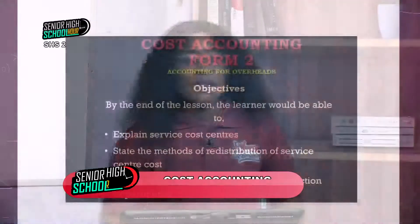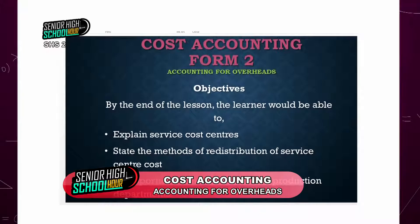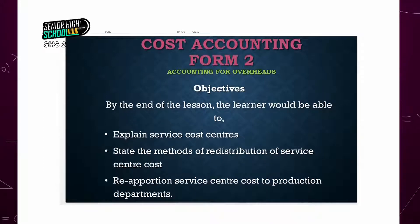Last week, we took a look at how costs are being allocated to the various cost centers — as in a department in an organization. Today, we are going to look at how we are pushing or re-apportioning the service cost centers overheads to the various departments in an organization. By the end of the lesson, we are all going to learn how cost centers work, explain cost centers, the methods of redistribution of the service cost center overheads, and then re-apportioning the service cost to the production department.